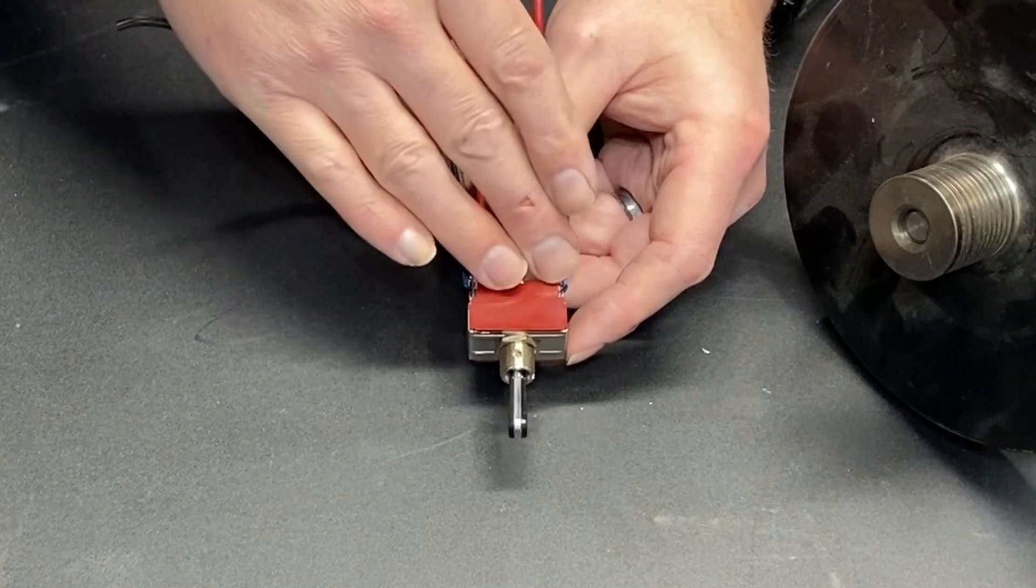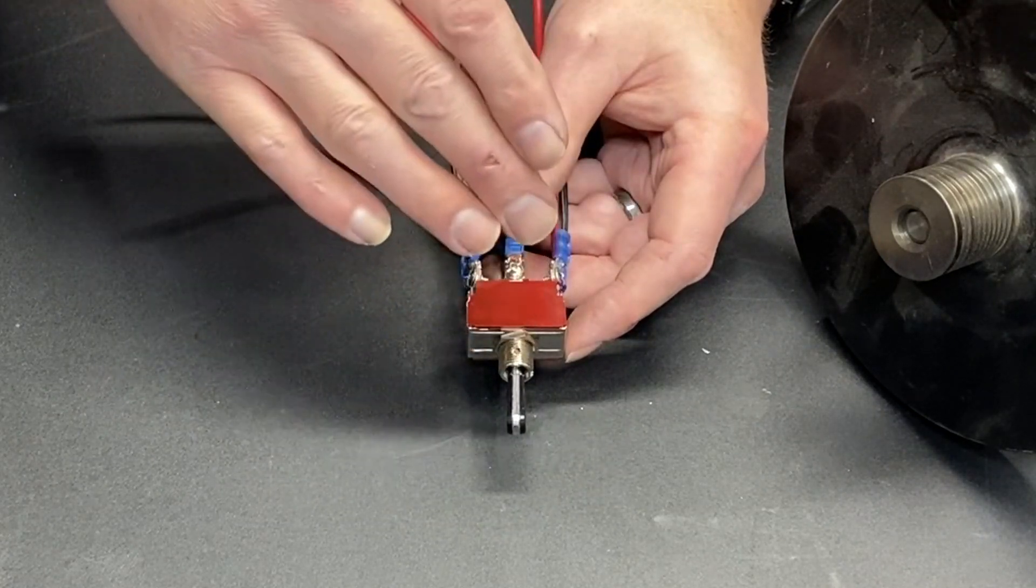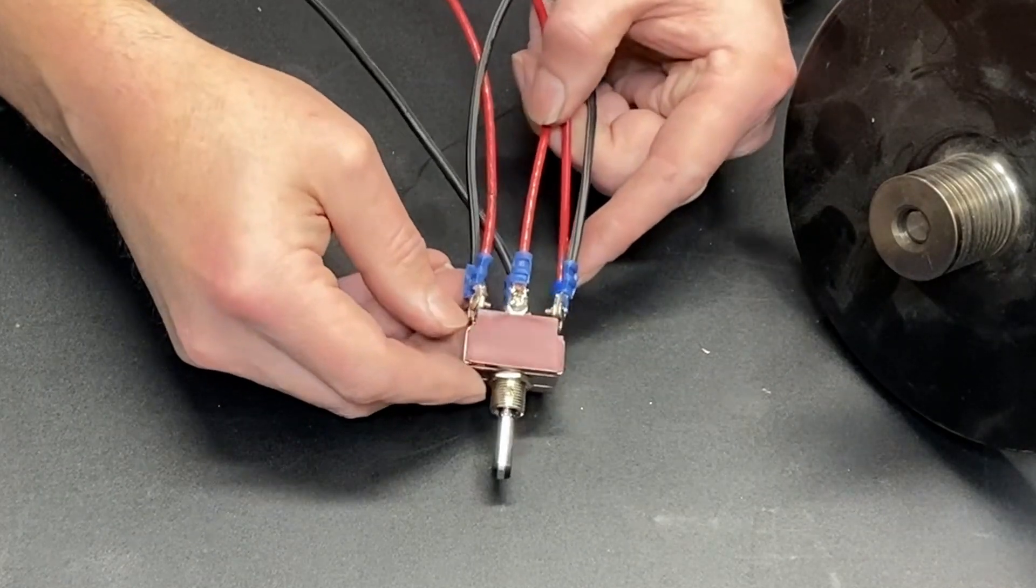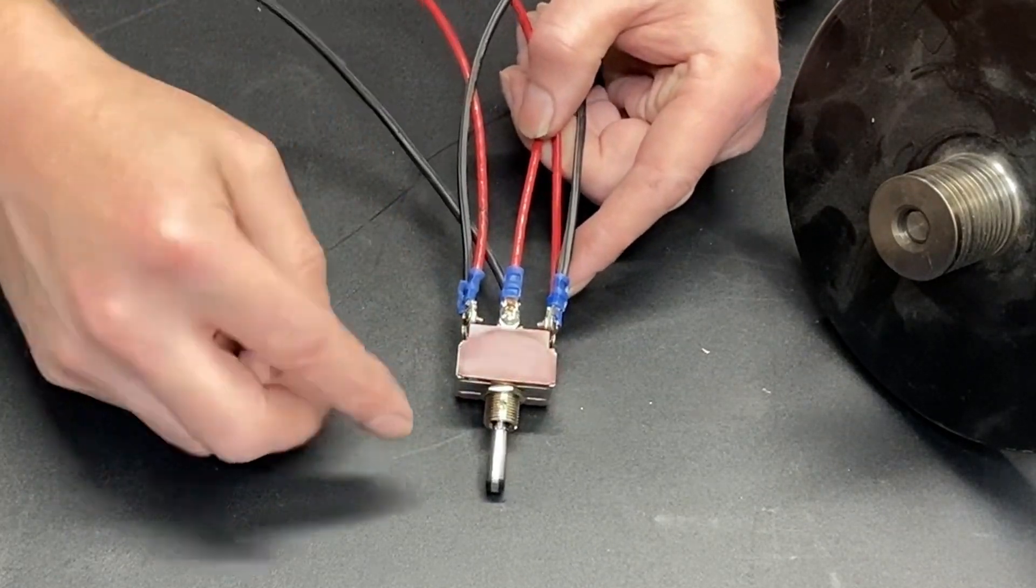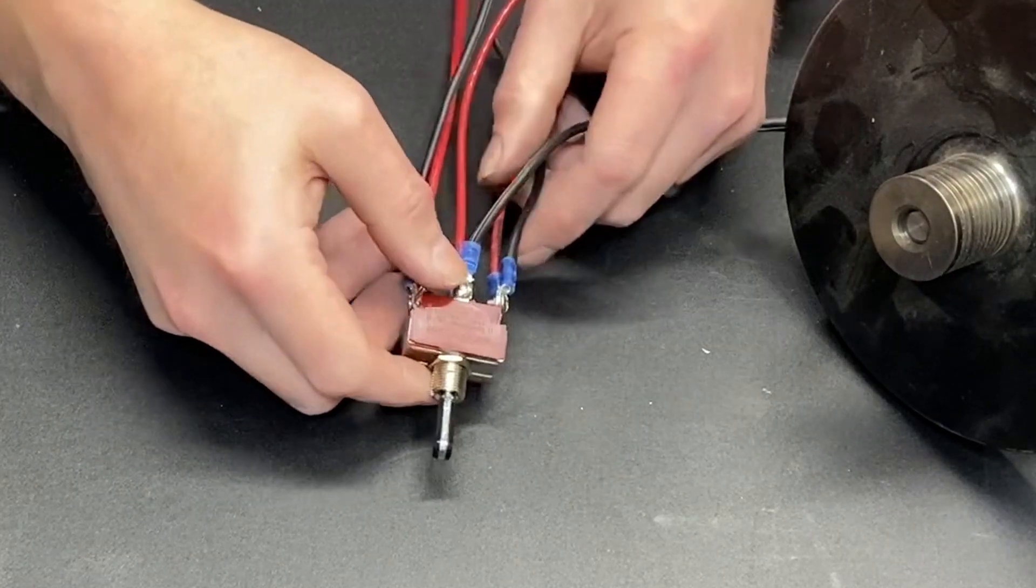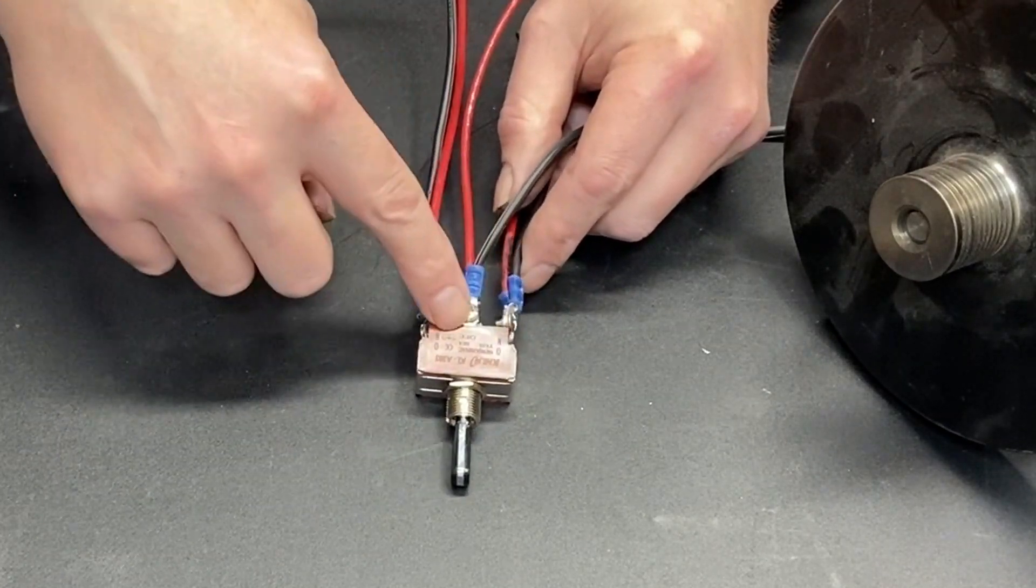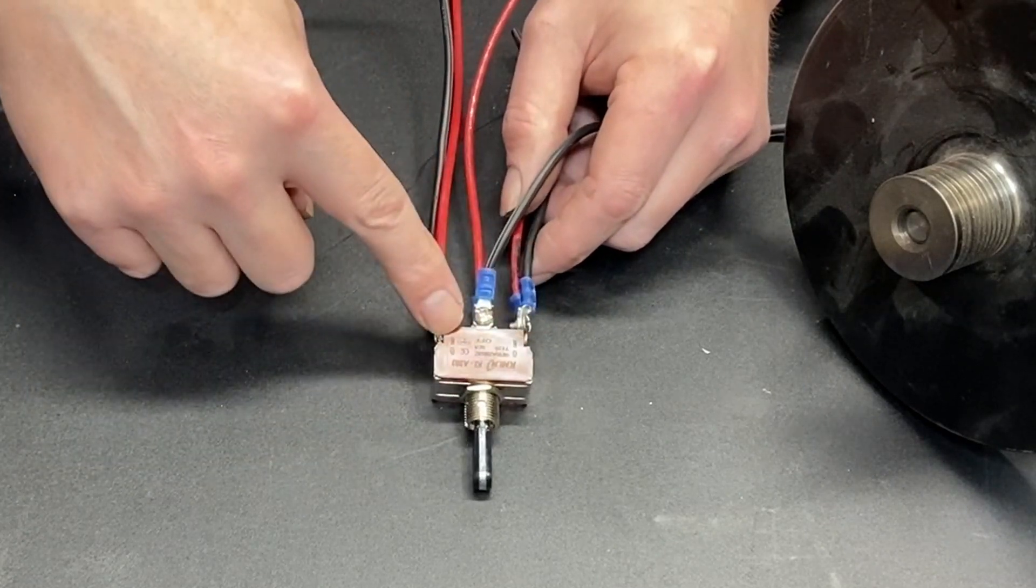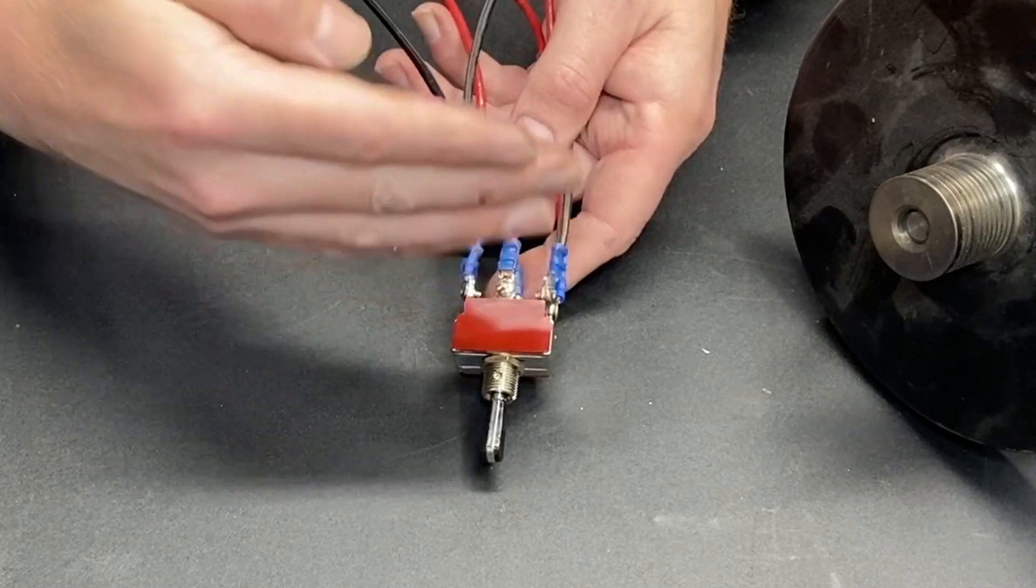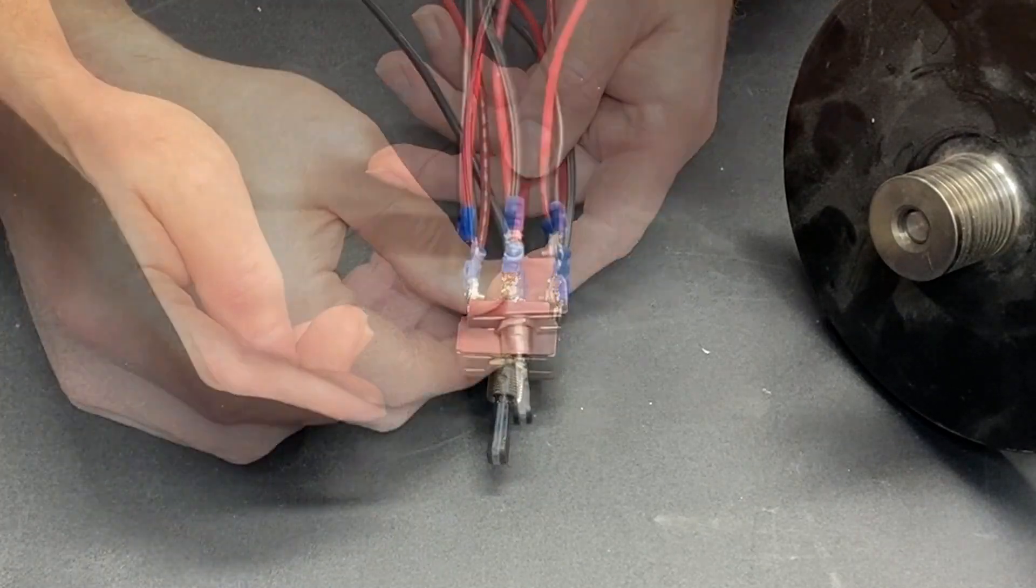The way a double-pole, double-throw switch works is it's basically two switches. You have this half, these three terminals, and you have this half, these three terminals. What these three terminals are doing is only related to these three terminals in that they're both getting switched at the same time.